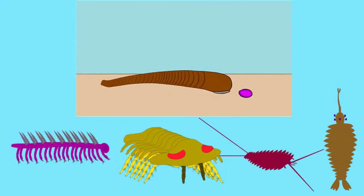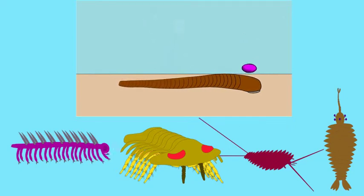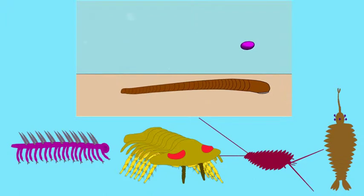And so, while many of these coelomate worms are predators, they certainly lack some of the adaptations which would make them better predators.